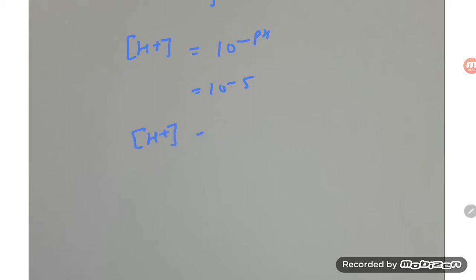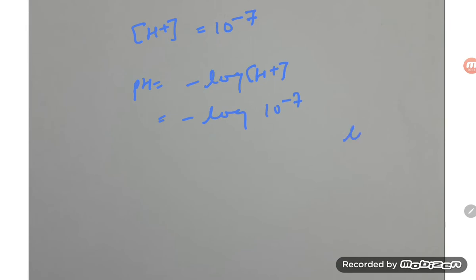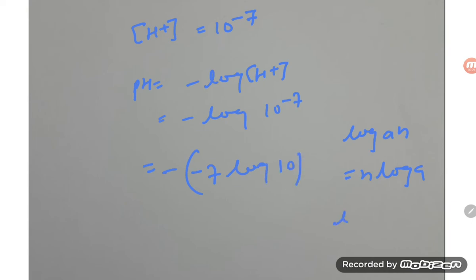When hydrogen ion concentration is decreased by 100 times, the new concentration is 10 to the power of minus seven. So pH equals minus log of 10 to the power of minus seven. Using the log rule — log of a to the power n equals n log a — that gives us minus times minus seven times log 10. Since log 10 equals one, pH equals seven.